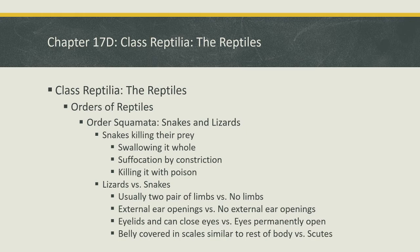Lizards versus snakes — differences: most obviously, lizards usually have two pairs of limbs versus no limbs for snakes. Next, lizards have external ear openings versus no external ear openings for snakes, so lizards generally have better hearing. Then eyelids — lizards have eyelids and can close their eyes, whereas snakes' eyes are permanently open. Finally, lizards have belly scales similar to the rest of their body, whereas snakes have those specialized scoots — scales on their bellies used for movement.